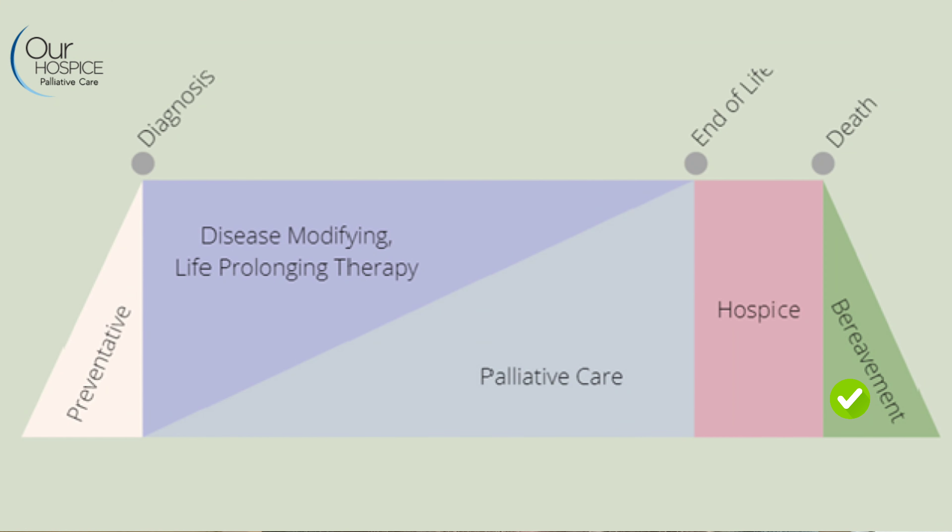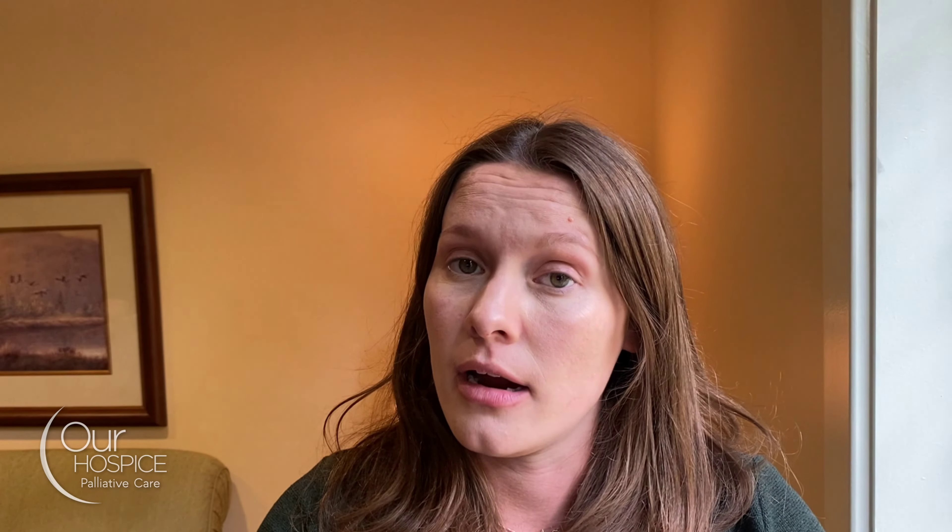The key idea is that all hospice is palliative care, but not all palliative care is hospice. Palliative care can happen at the same time as any and all aggressive interventions and treatments. Hopefully that helps explain palliative care versus hospice — when one starts and when one ends.